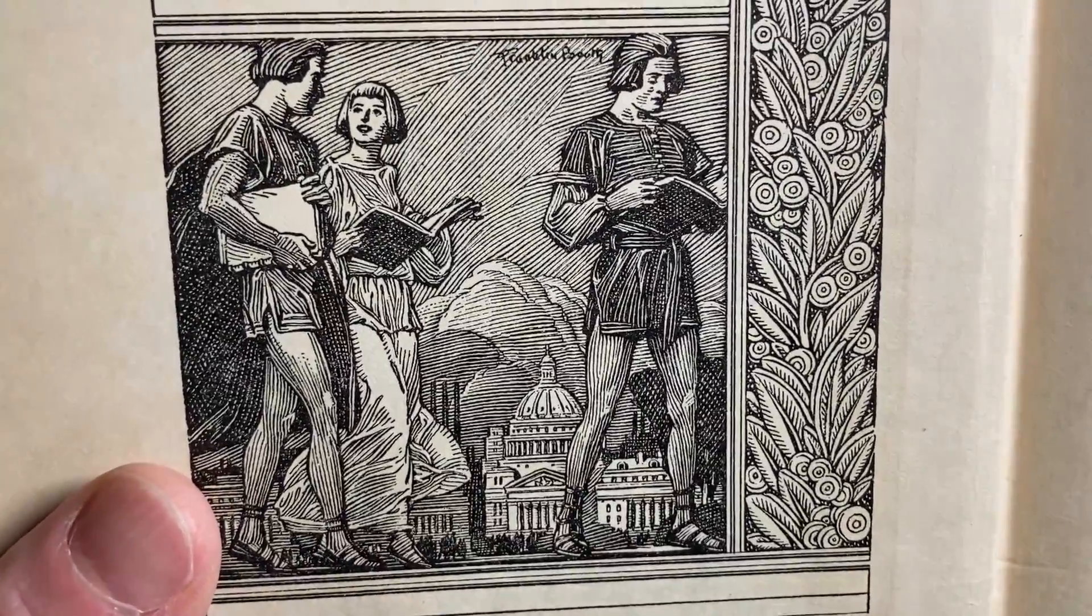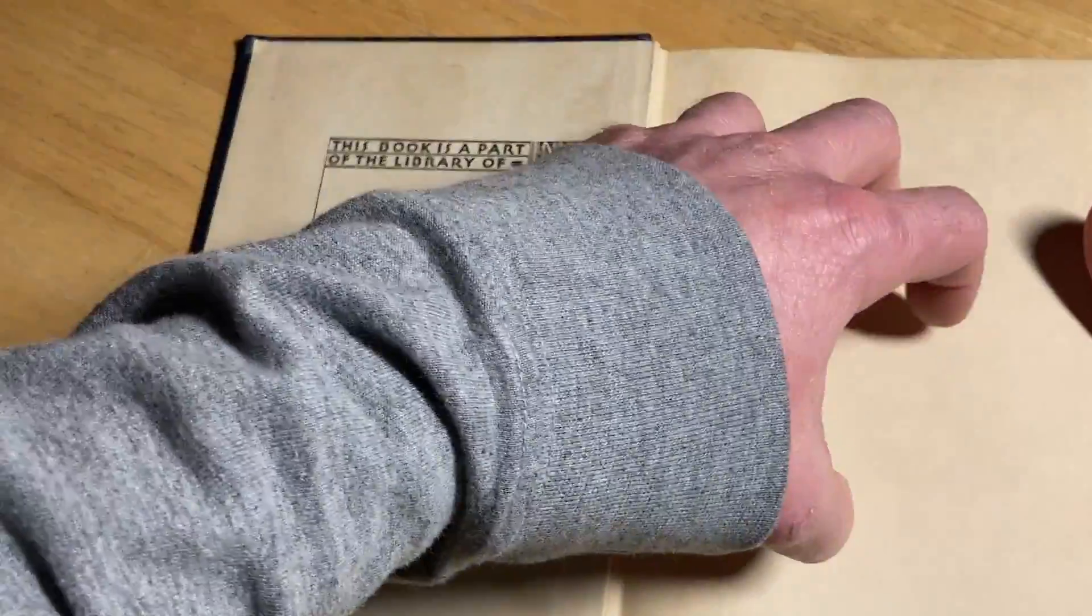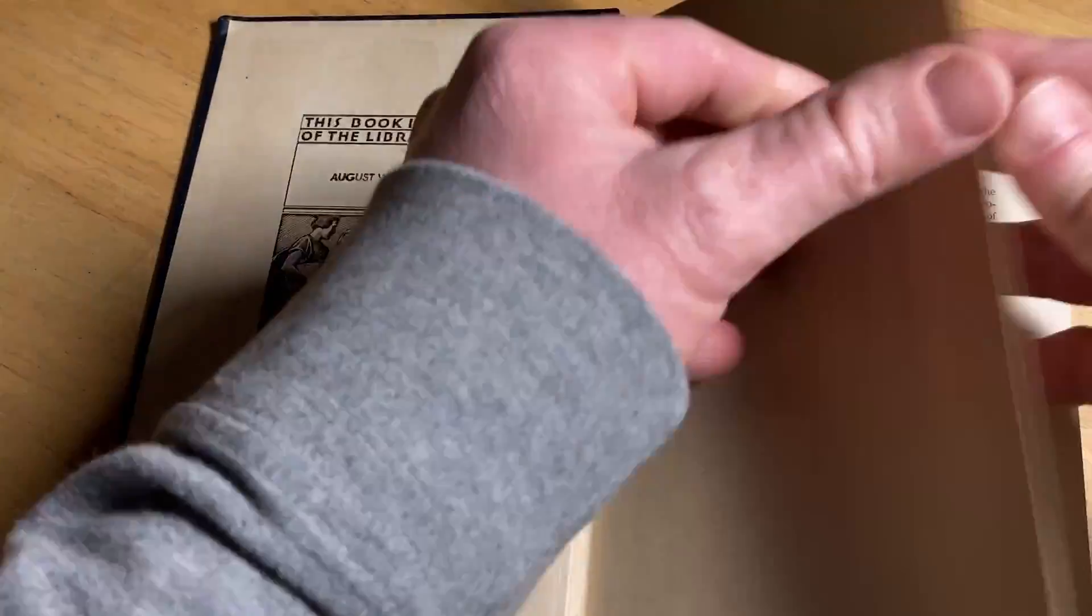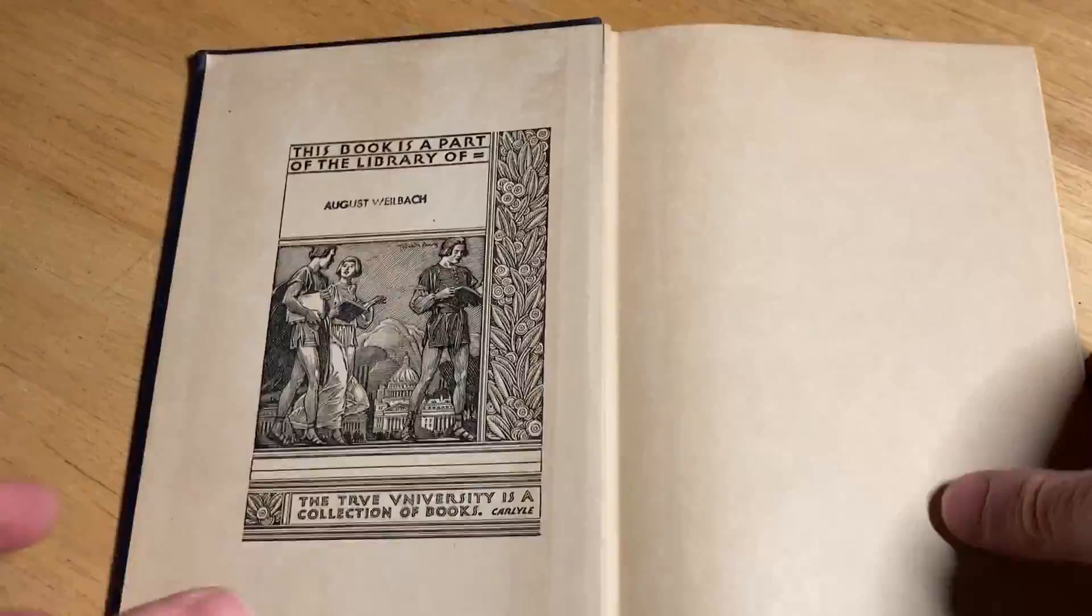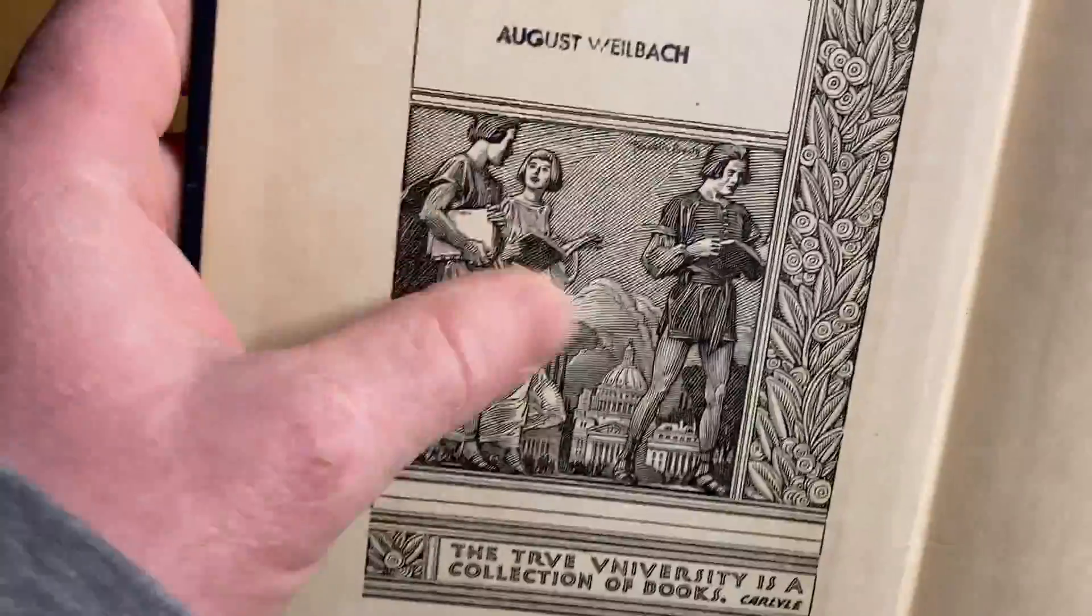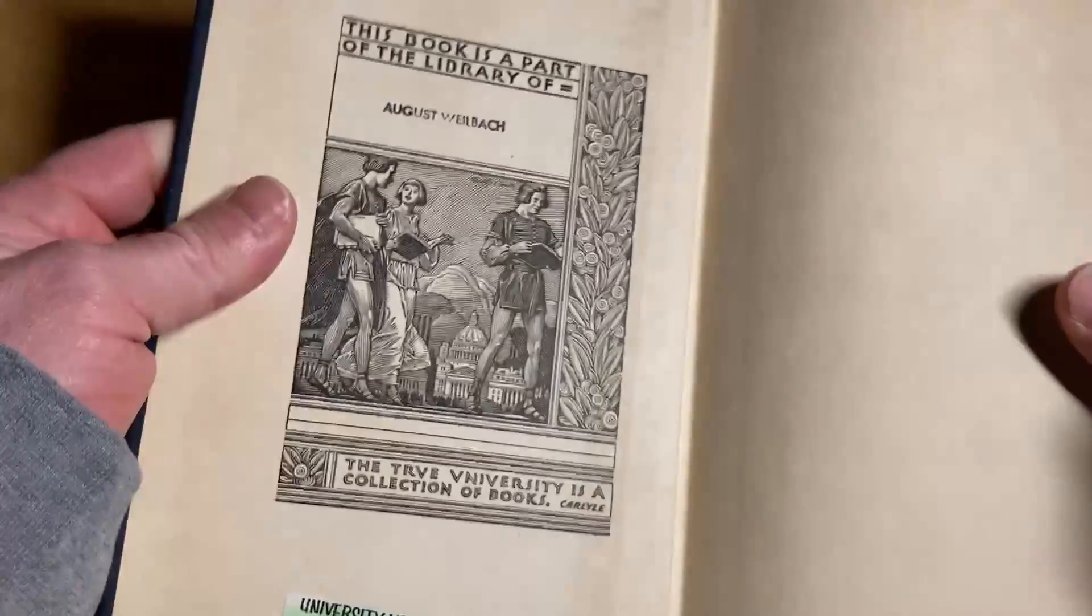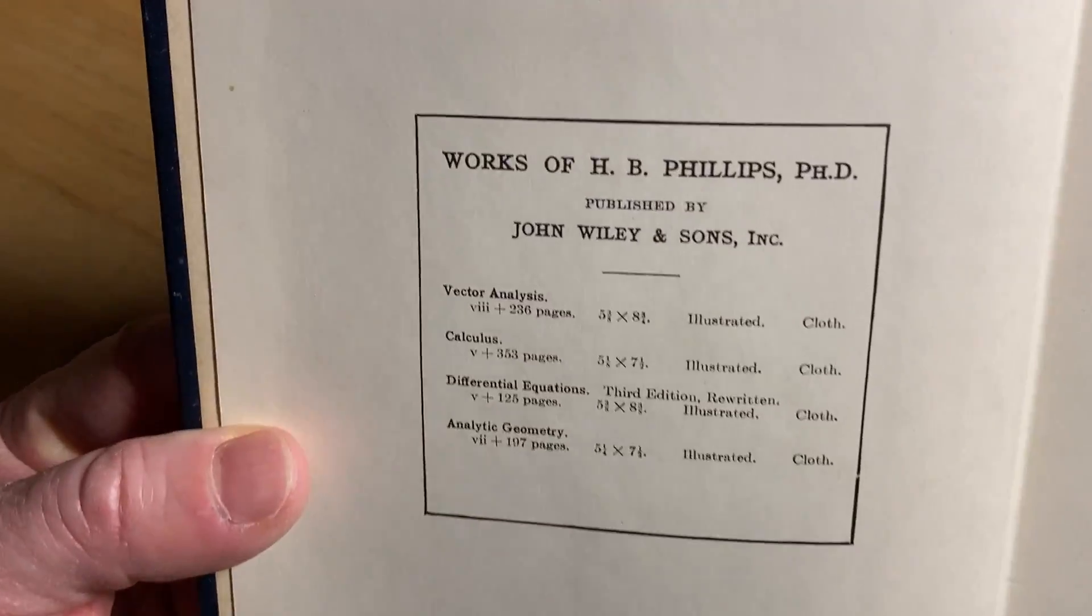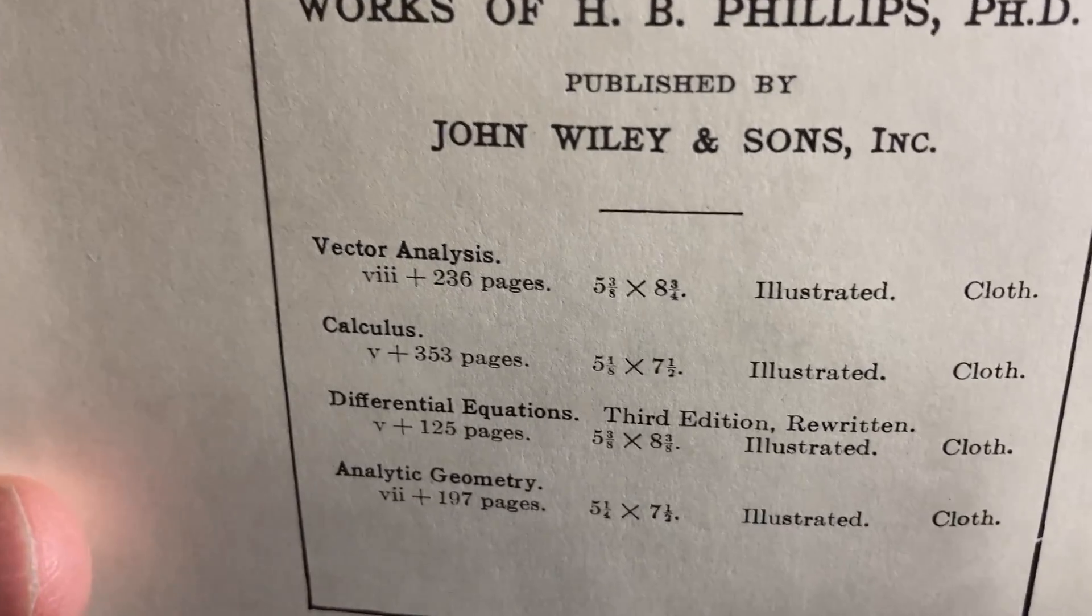It's kind of cool, right? I don't know if people still do this. I thought about doing it actually, like putting a little math sorcerer thing on all my books. Maybe I should. Vector Analysis. So back then, a lot of people did it, they had these little things they would put on their books, part of their reading libraries. Works of H.P. Phillips, PhD published by John Wiley and Sons.